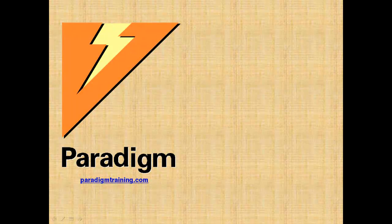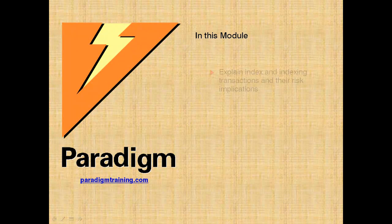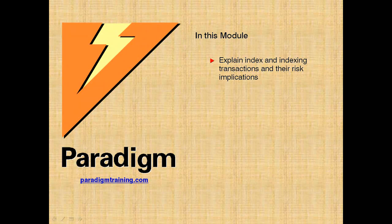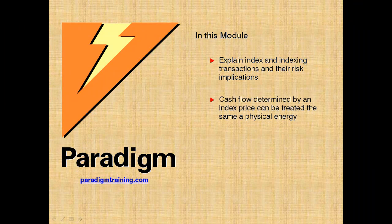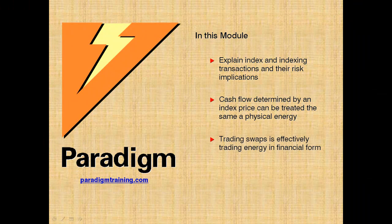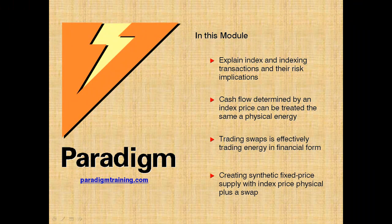Your guide through this tutorial series will be yours truly. My name is Frank. We begin at the beginning of this module by understanding indexation and the risk implications to financial transactions that are indexed. We will see why the resulting index-determined cash flow is, to a trader, effectively the same as physical energy, and how buying and selling swaps is simply trading energy in financial form. This financial index cash flow is key to enabling us to use the swap to hedge price risk in the purchase or sale of energy.